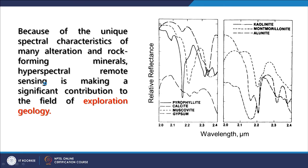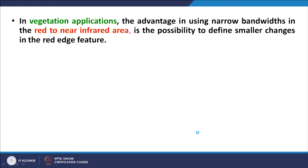This is an example of exploration geology where different minerals — porphyroid, calcite, muscovite, gypsum — all have different curves when seen in a continuous spectral fashion. But if we take bands with gaps, we get only dots rather than continuous curves, so identification becomes much easier with hyperspectral. In the case of vegetation applications, if vegetation is under stress there will be a shift in the red edge which can be detected through hyperspectral remote sensing.